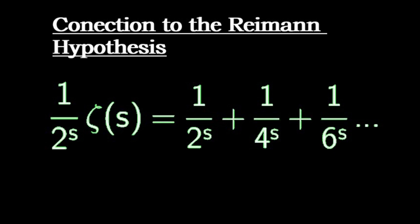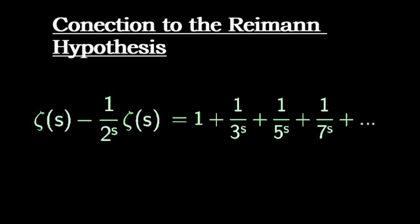So subtract this from the zeta function. On the right hand side, we will now have the sum over the odd numbers. And on the left hand side, we can factor zeta and get zeta times 1 minus 1 over 2 to the s.